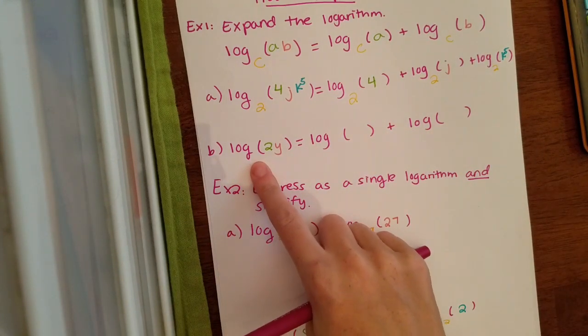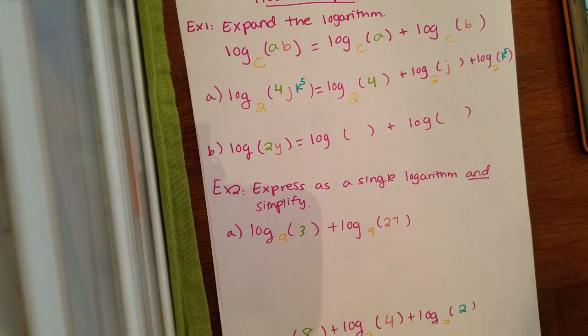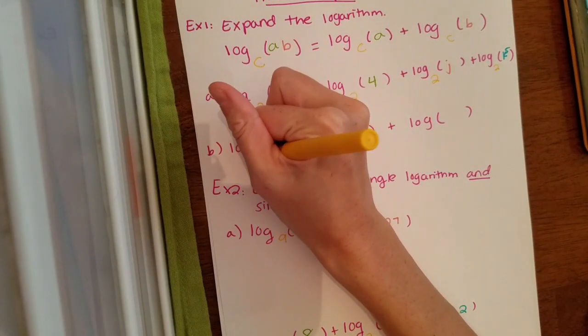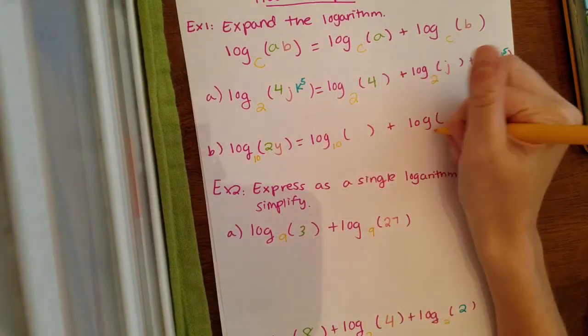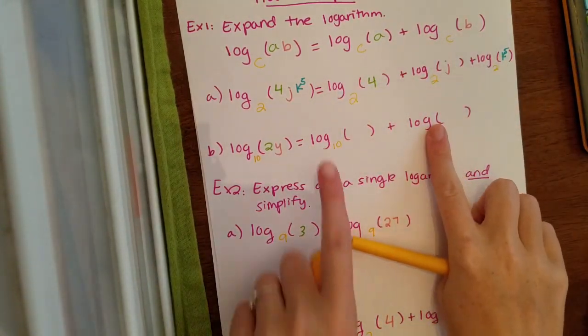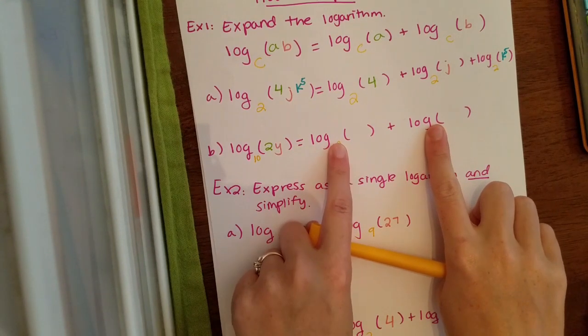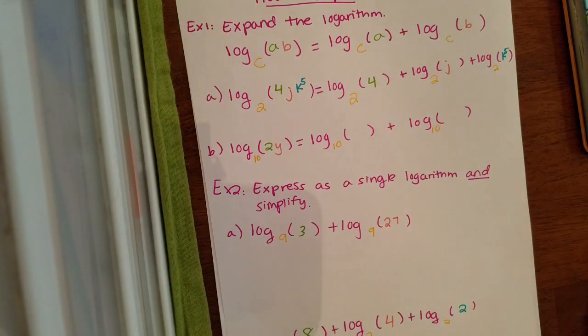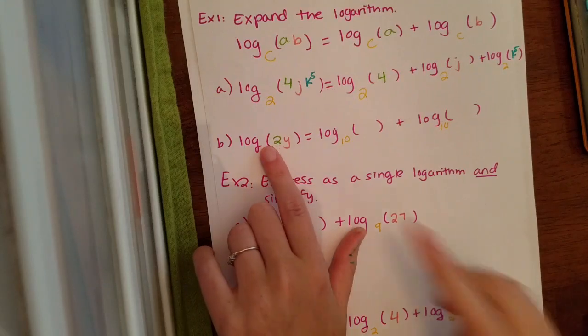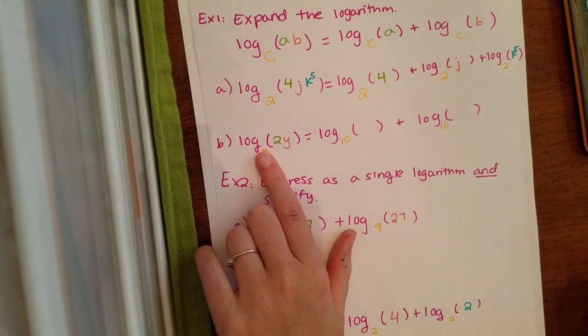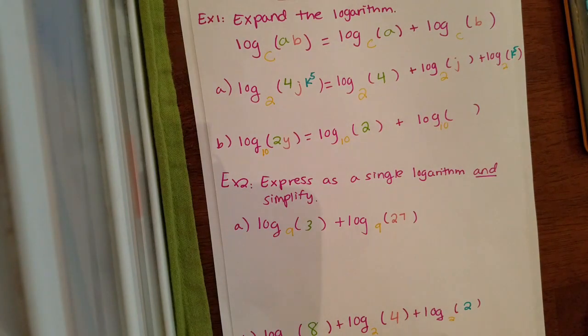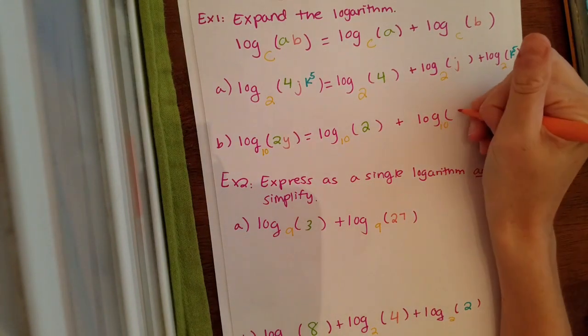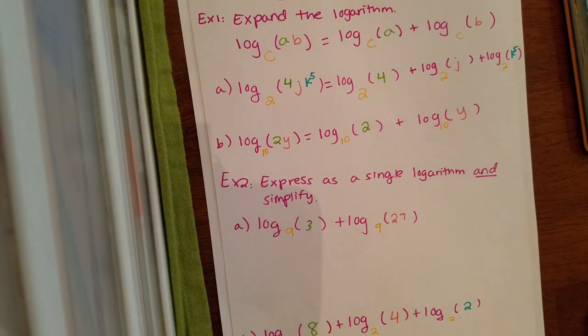Now remember from our previous section, if you don't see a base, there's secretly a 10 there, which you can write it in, you don't have to. If it's bothering you, you can make all these 10s. Or if you want, you can just leave off the 10 and act like it's not there. It's a personal thing. I'll leave it up to you. And then each piece goes into their own log. So my two is going to go into its own log, and the y is going to go into its own log.